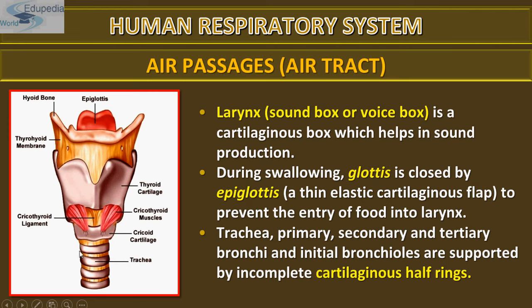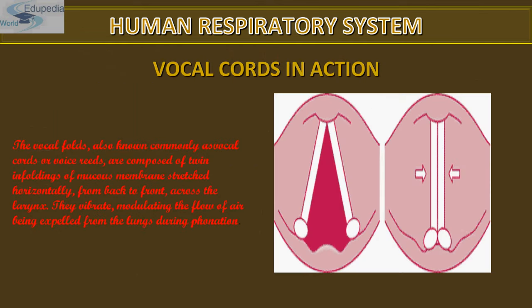The larynx also has muscles, cartilage, and ligaments to support the vocal cords, including thyroid cartilage, cricoid cartilage, cricothyroid muscle, and cricothyroid ligaments. The vocal folds — commonly called vocal cords or vocal reeds — are composed of twin enfoldings of mucous membrane stretched horizontally from back to front across the larynx. They vibrate modulating the flow of air being expelled from the lungs during phonation.